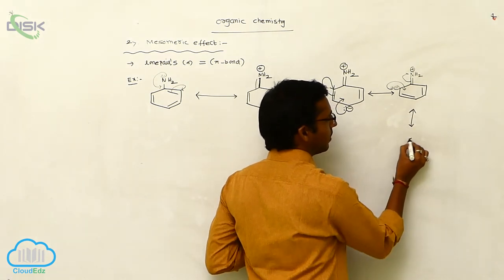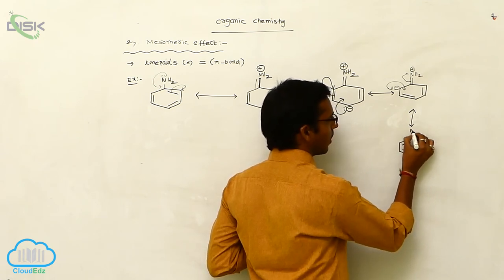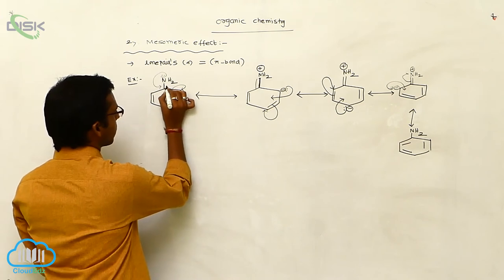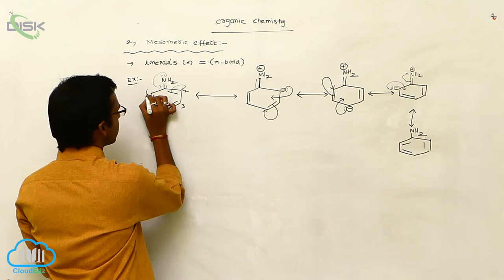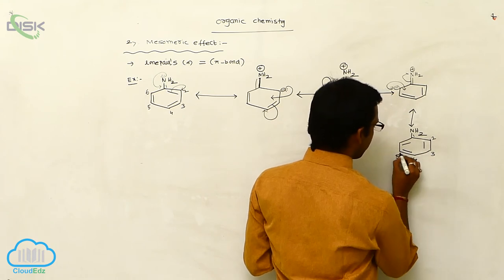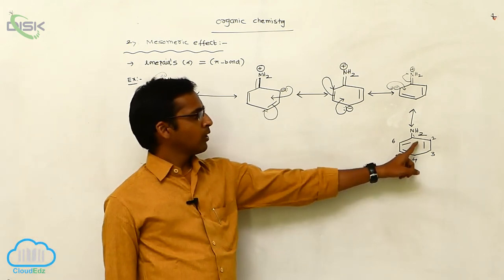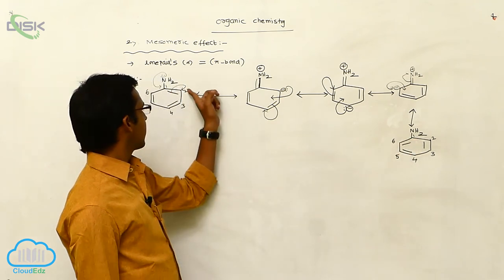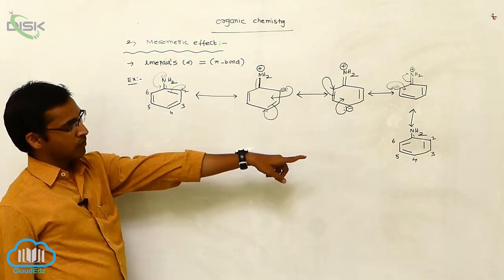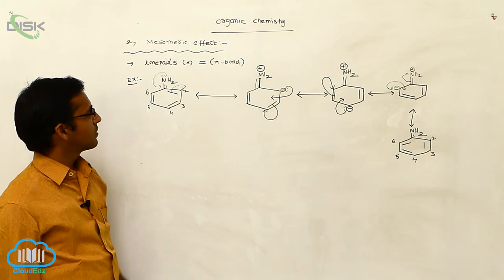Finally, this gives the complete resonating structures. Give a numbering: 1, 2, 3, 4, 5, 6. Observe: at positions 1 and 2, there is one pi bond in one structure, but no pi bond at 1 and 2 in another. At positions 2 and 3, no pi bond in one but one pi bond in another. At positions 4 and 5, no pi bond in one but one double bond present in another. These are the resonating structures of aniline.